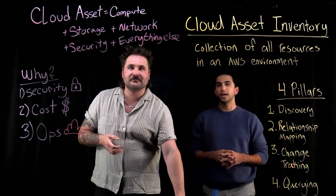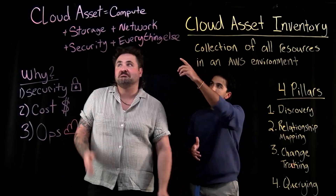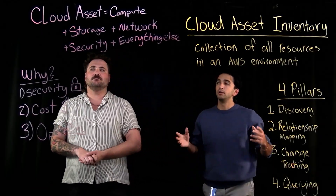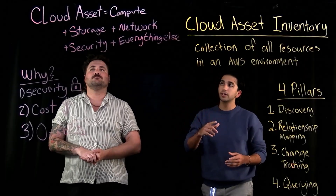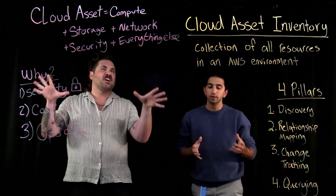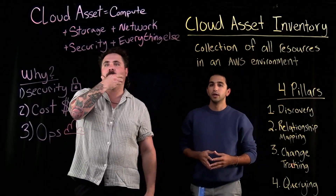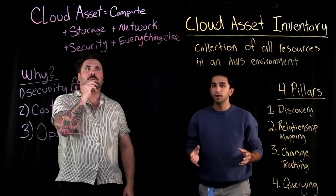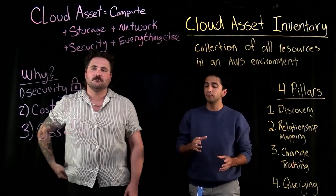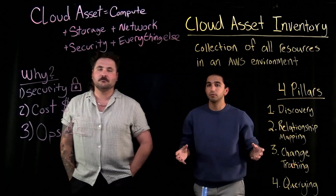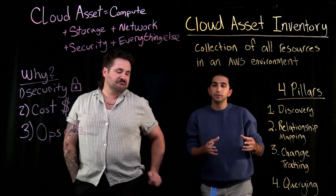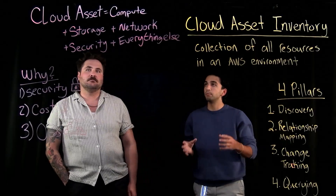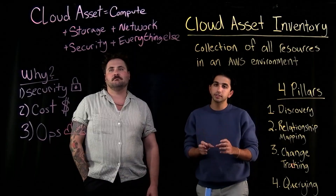So the first question we should be asking is: what is a cloud asset? As you see on the top left, our formal definition is infrastructure that contains resources like compute, storage, networking, security, and everything else from networking configurations to different VPC configurations — it really can depend on every different account. You can think of it as every part of your infrastructure that keeps your application running, whether it's an engineer's test account or a production account that's actually running the application. All of these are components that come together, which consist of cloud assets.